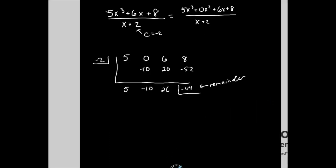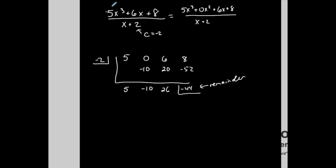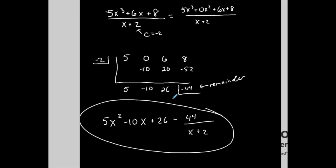Now, how do I represent my solution? I have to put it back in polynomial form. I started with a 3rd degree, this one should start with a 2nd degree, 1 degree less. 2nd degree, and then represent all terms in standard form. 5 is the coefficient of my 1st term, negative 10 is the coefficient of my 2nd term, 26 is my constant term. Negative 44 is my remainder over x plus 2. Again, the remainder is not 0, which means that x plus 2 is not a factor of that numerator, 5x to the 3rd plus 6x plus 8.